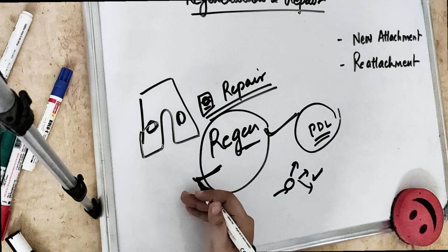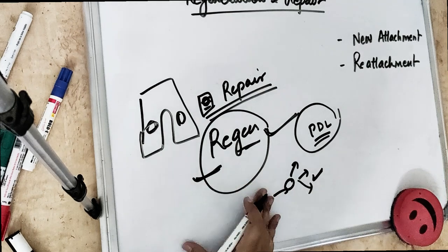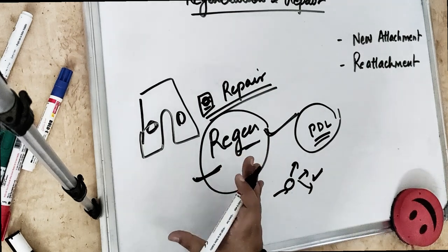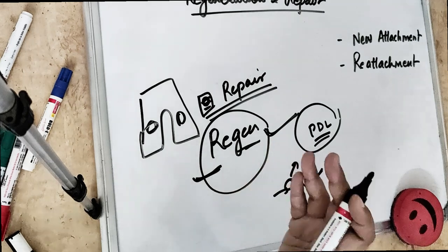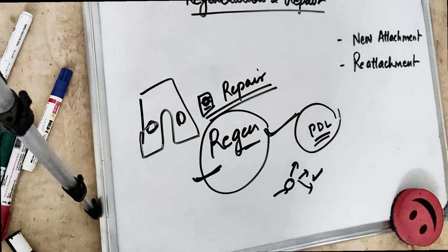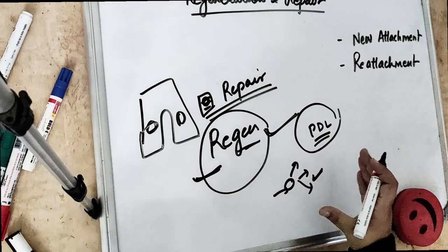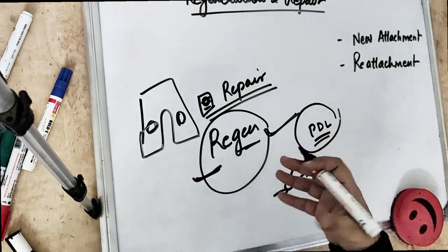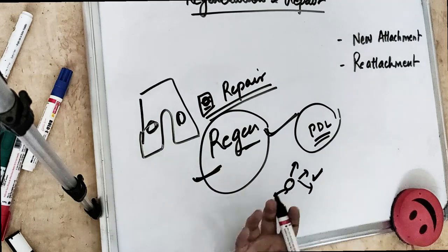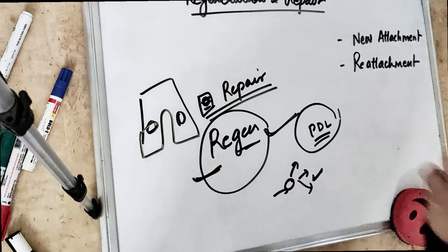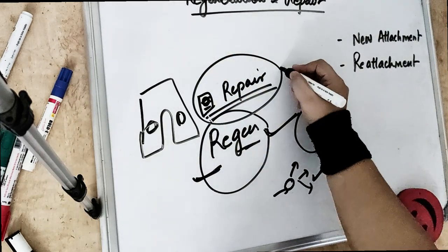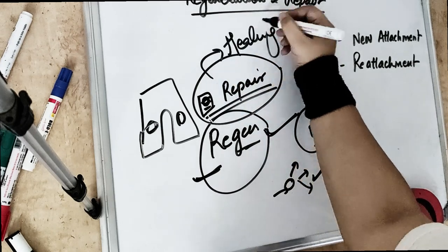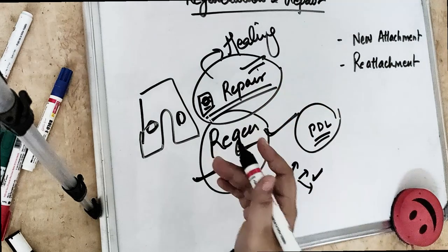Regeneration is the natural renewal of a structure, produced by the growth and differentiation of new cells. These cells are the same type that the previous tissue was producing - the same kind of cells. Repair, on the other hand, is healing by scars.